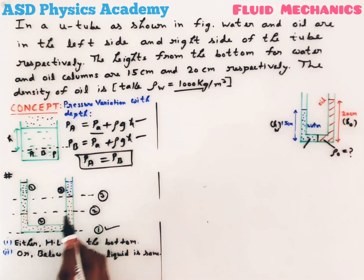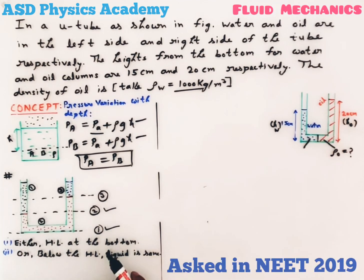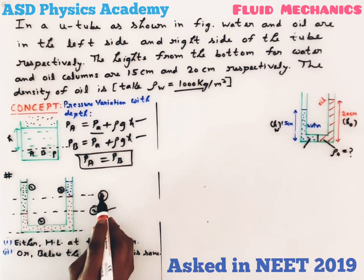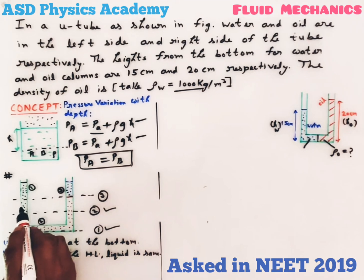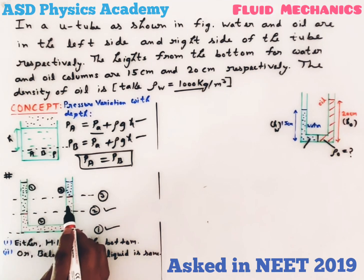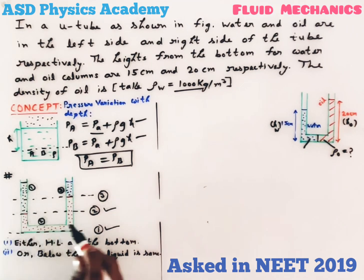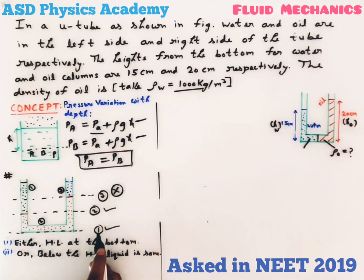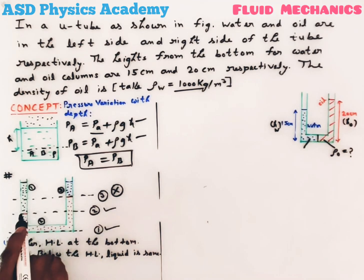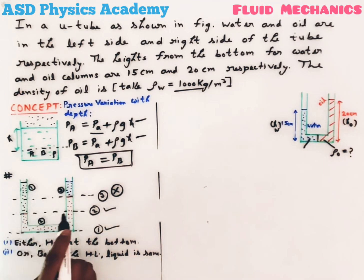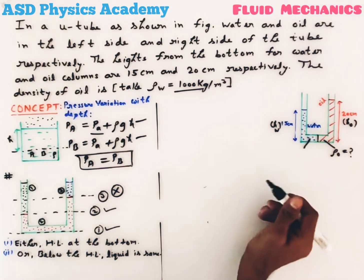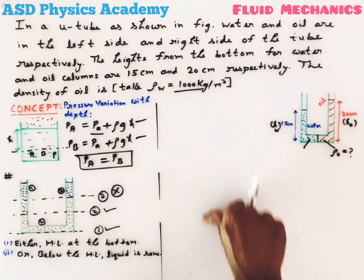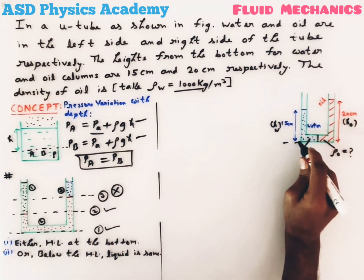For the third level, one side has black ink and the other side has red ink — these are different liquids, so this is wrong. Therefore, at level one all points have the same pressure, and at level two the two marked points also have the same pressure.